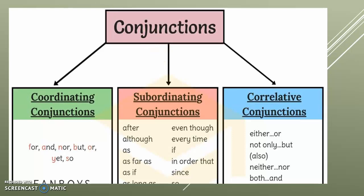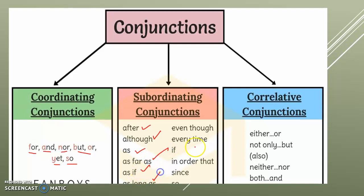There are different types of conjunctions. The first type is coordinating conjunctions, like: for, and, nor, but, or, yet, so. The second type is subordinating conjunctions, like: after, although, as, as for, as if, as long as, even though, every time, if, in order that, since, and so on.